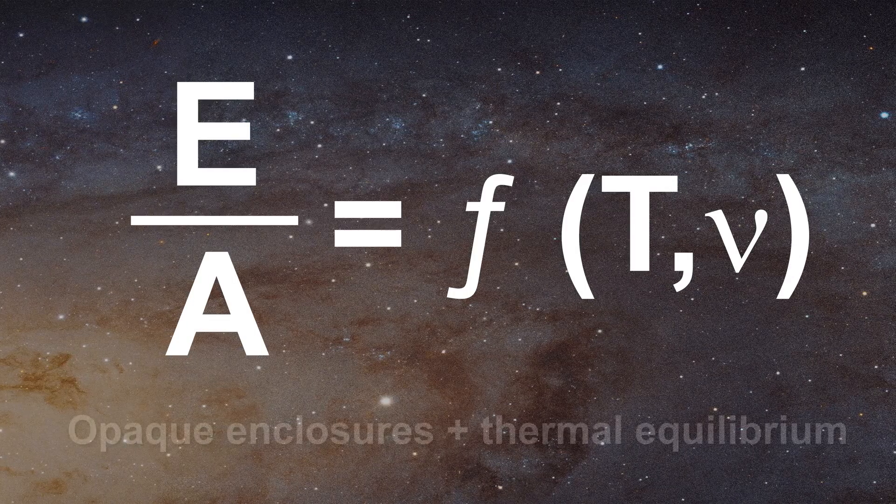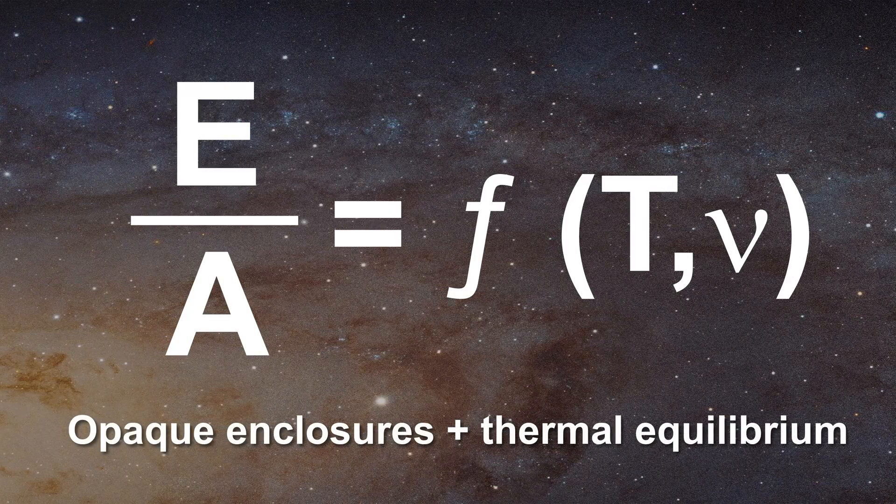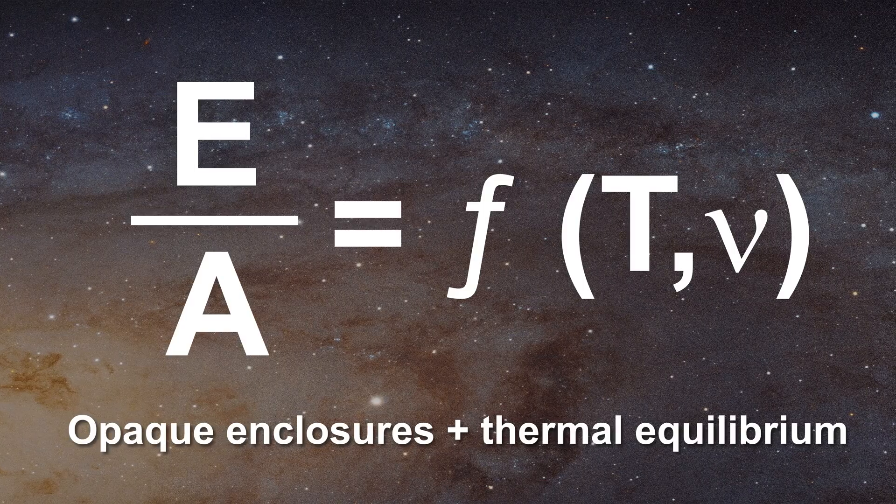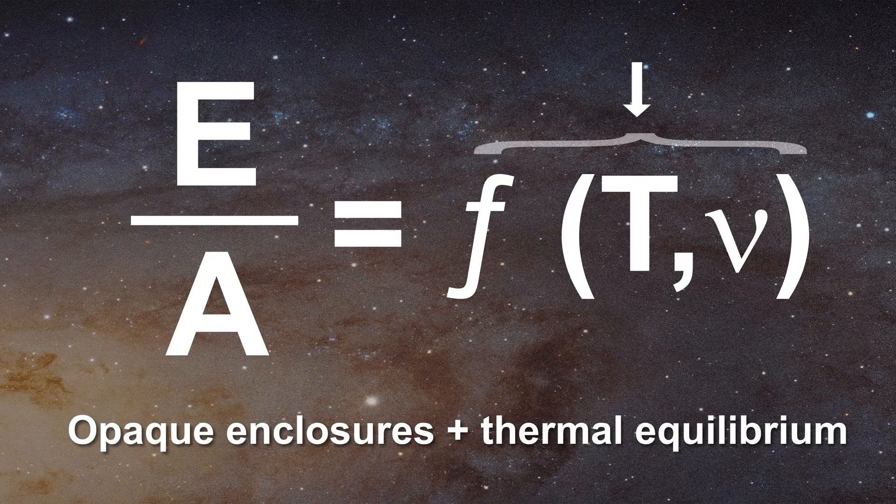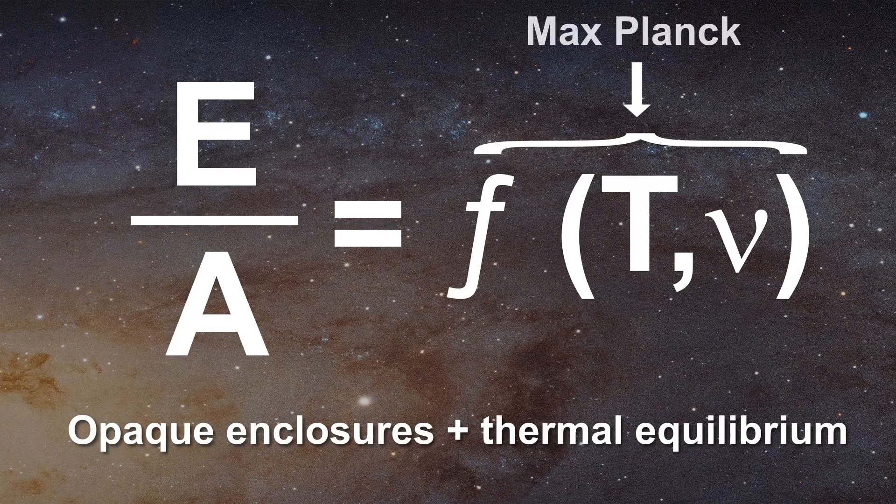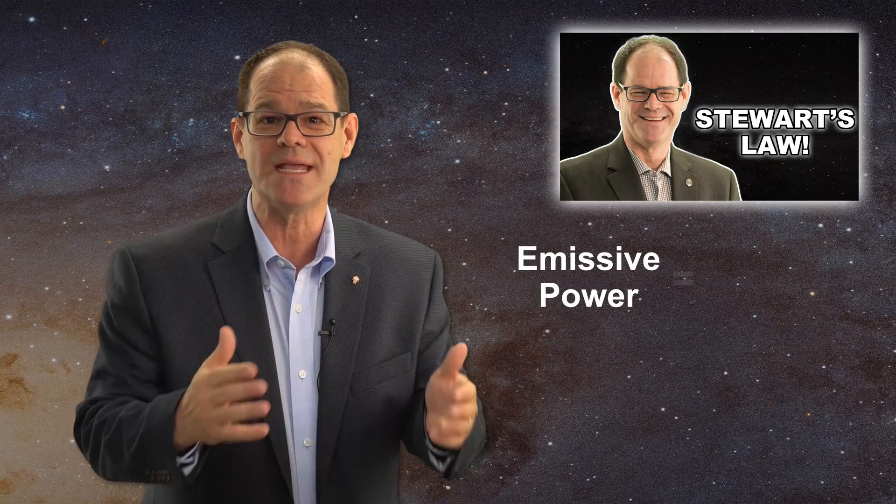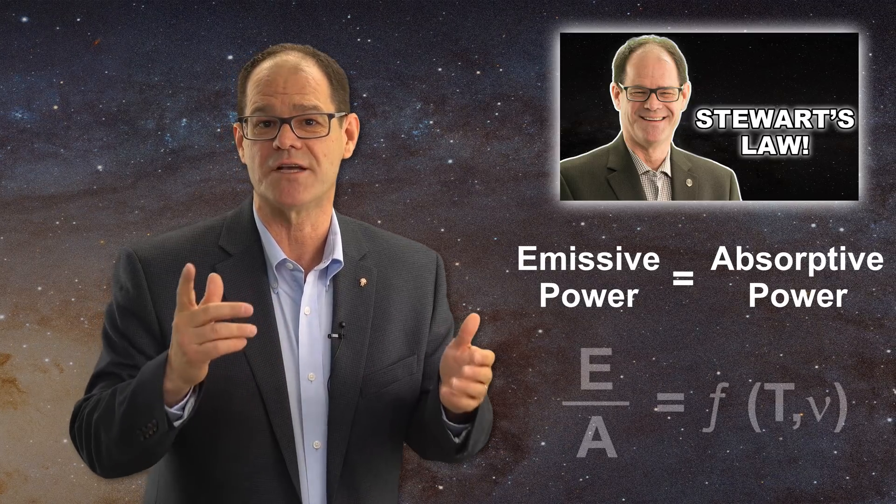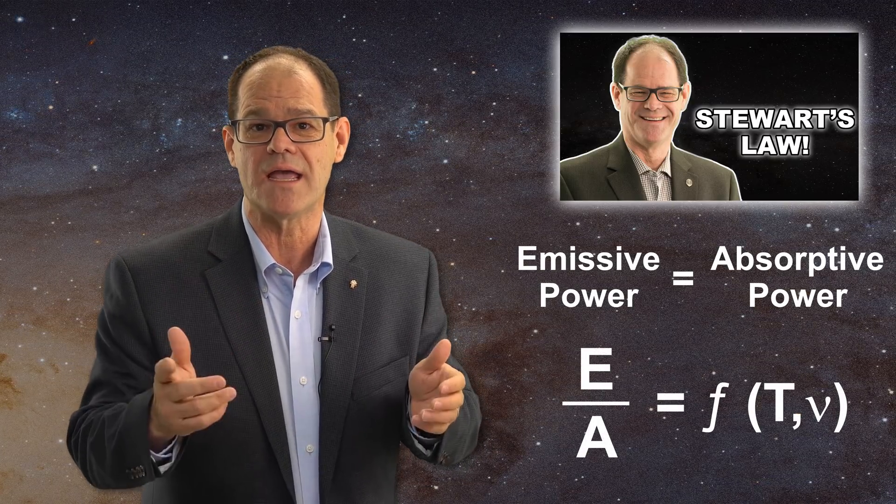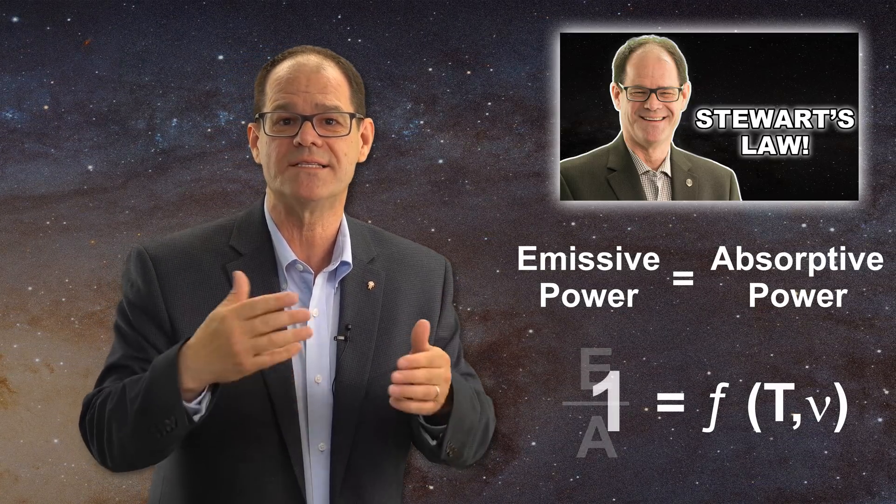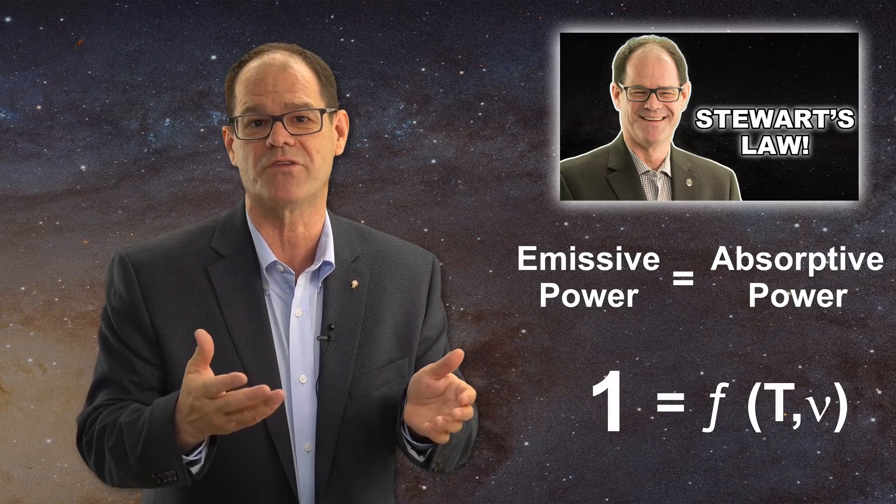In thermal equilibrium, the unspecified function in Kirchhoff's law was eventually given to us by Max Planck. We learned previously that objects in thermal equilibrium, without conduction or convection, emit as much light as they absorbed. Stated another way, the emissive power of an object would be equal to its absorptive power. In Kirchhoff's equation, E would equal A, and we are left with one is equal to some function of temperature and frequency.